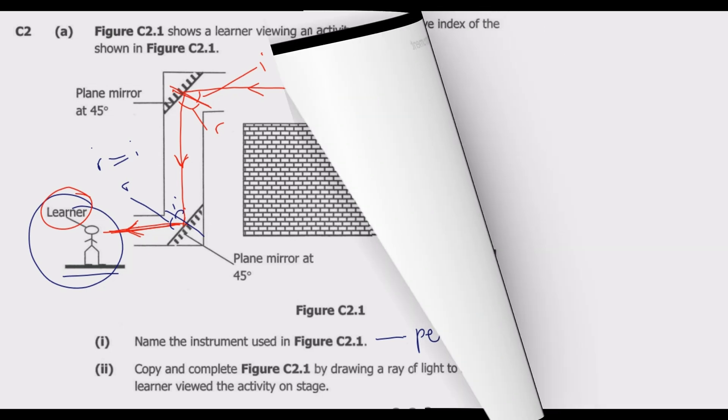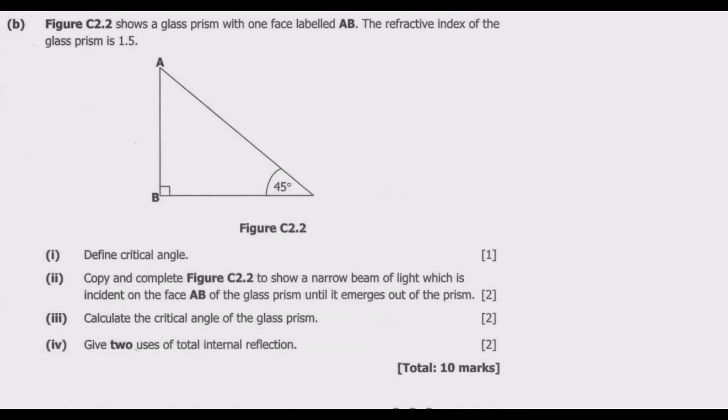Question B of C2: Figure C2.2 shows a glass prism with one face labeled AB. The refractive index of the glass prism is 1.5. Number 1: define critical angle. When I talk about the critical angle, I'm referring to the angle of incidence in a denser medium for which the angle of refraction in the less dense medium is 90 degrees.